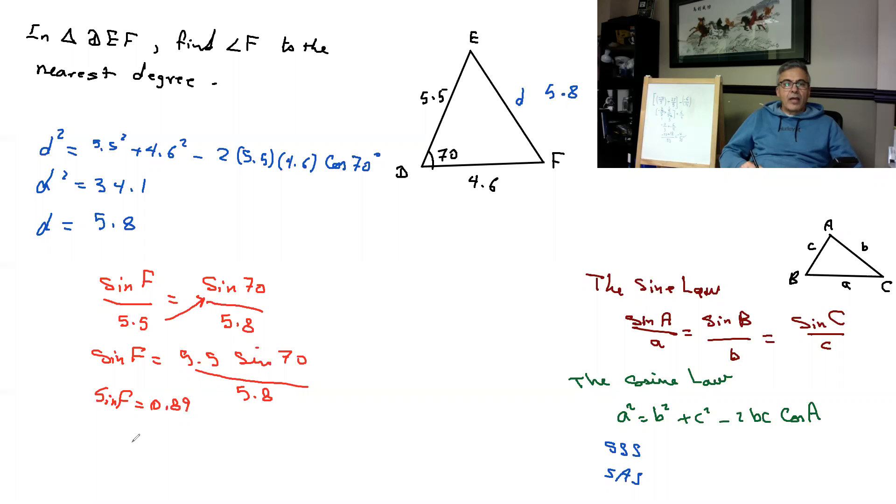Therefore, angle F—you just go second function sine of 0.89—and that would give us 63 degrees. So that's angle F.